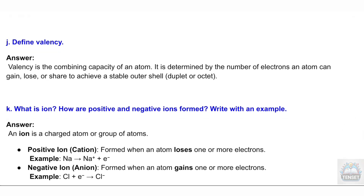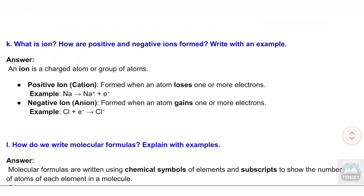J. Define valency. Answer: Valency is the combining capacity of an atom. It is determined by the number of electrons an atom can gain, lose, or share to achieve a stable outer shell — duplet or octet.